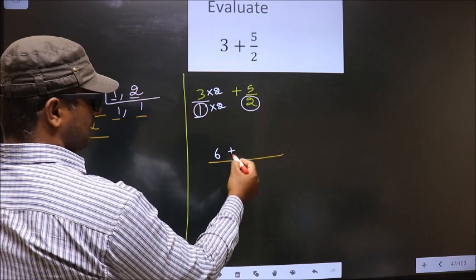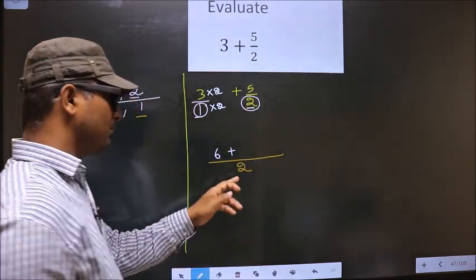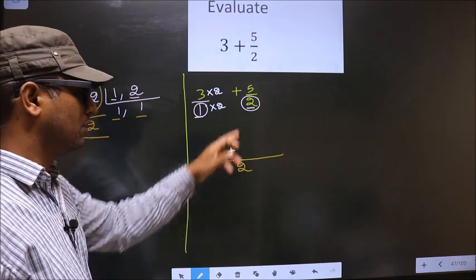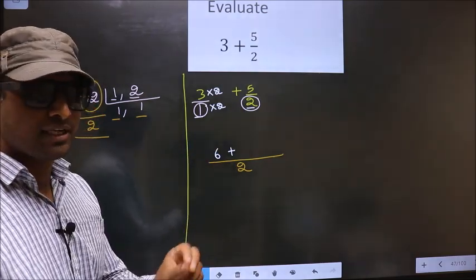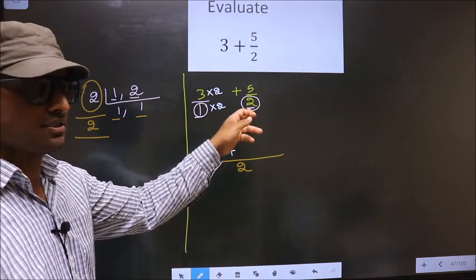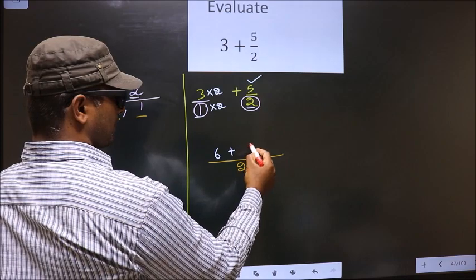Here we have 2. Here also we have 2. Both the numbers are same. So we do not need to multiply any number to this. The numerator you write as it is, that is 5.